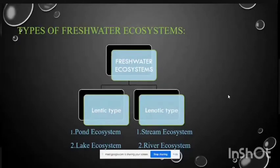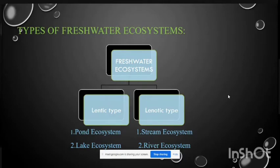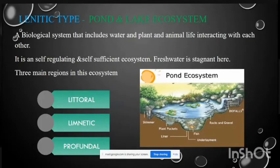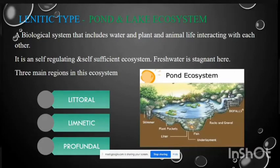There are two types of freshwater ecosystems. First is the Lentic type and second is the Lotic type. Under the Lentic type, pond ecosystem and lake ecosystem come. The Lotic type includes streams and rivers — a biological system that includes water and plant life interacting with each other.